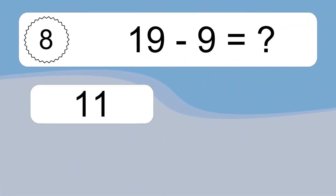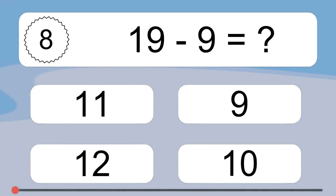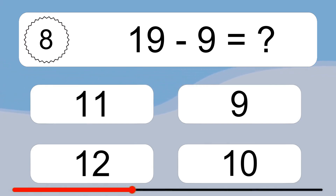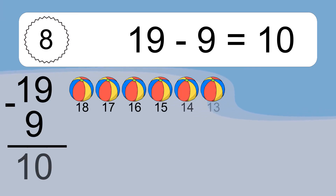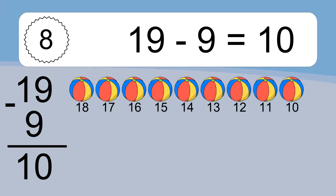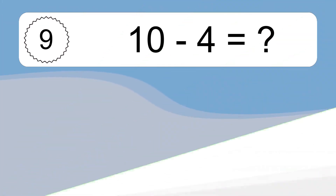19 minus 9 equals what? 19 minus 9 equals 10. Let's count it: 18, 17, 16, 15, 14, 13, 12, 11, 10.